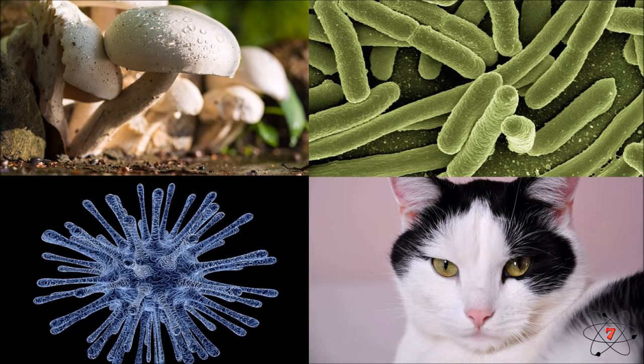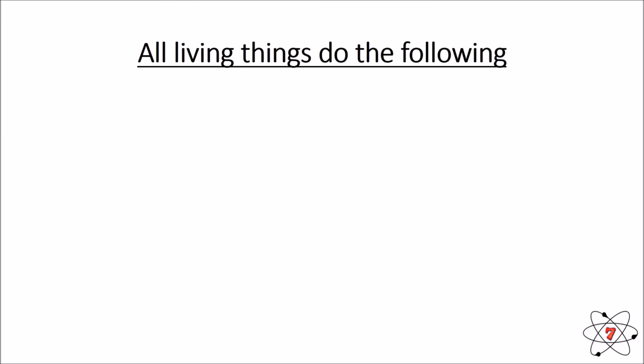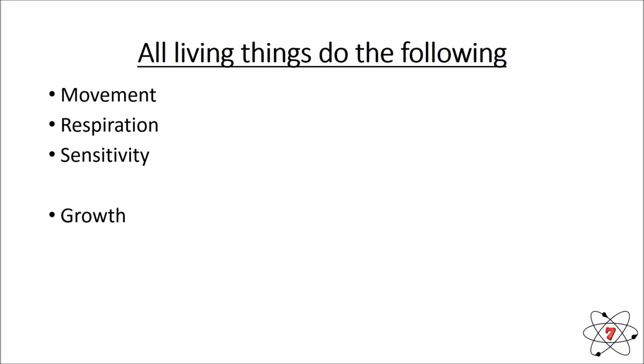It's really important to recognise that all living things do the following seven life processes: movement, respiration, sensitivity, growth, reproduction, excretion and nutrition. Any group of organisms that cannot do all seven things are not classified as living things.